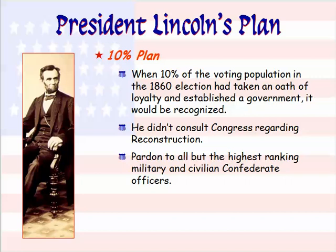Congress basically wanted to set up punishments. His plan also said that he was going to pardon — essentially give a get-out-of-jail-free card — to all but the highest-ranking military and civilian Confederate officers. Lincoln wanted to bring people back together, to make amends and move forward as a country rather than dwelling on punishing the Confederates.